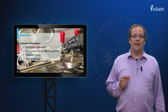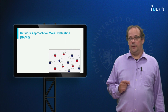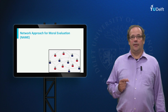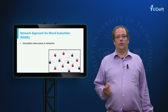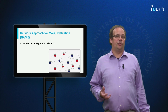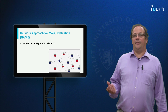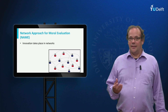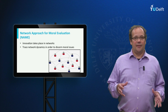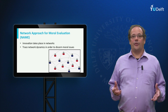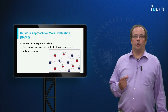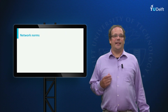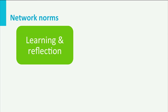The third approach is the network approach for more evaluation, or NAME. This approach was developed in Delft. It starts from the assumption that innovation takes place in so-called social networks, which might consist of companies, research laboratories, universities, suppliers, and so on. The idea is that we need to track and trace the network dynamics in order to discern more issues. The approach also consists of network norms to judge these networks. The two main network norms in the NAME approach are: first, learning and reflexivity; and second, openness and inclusiveness.